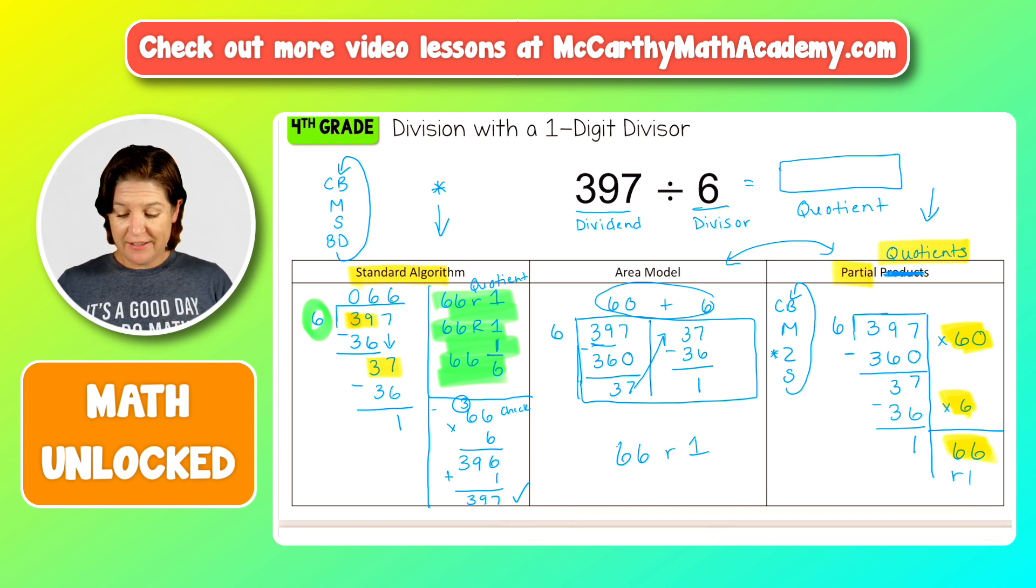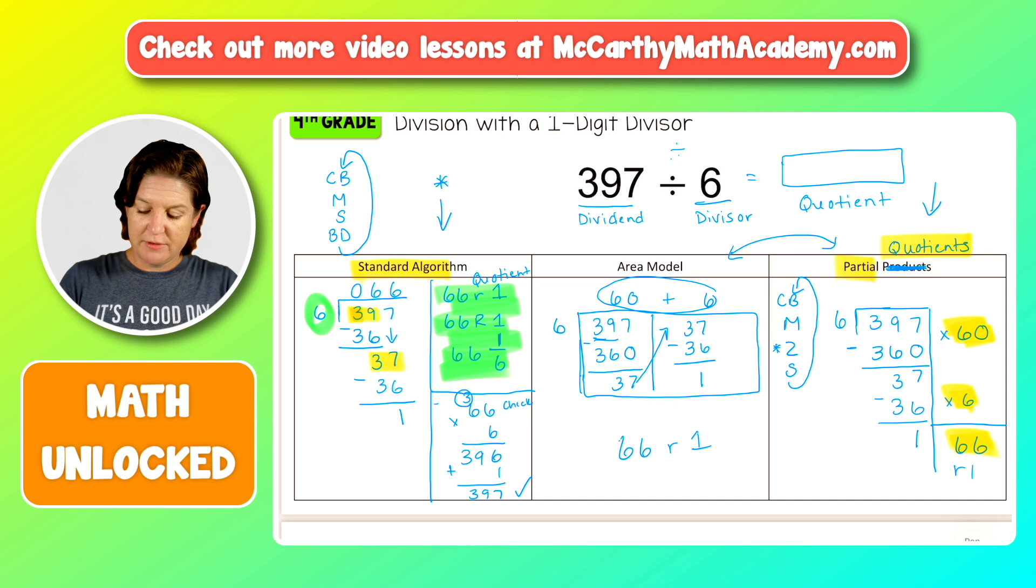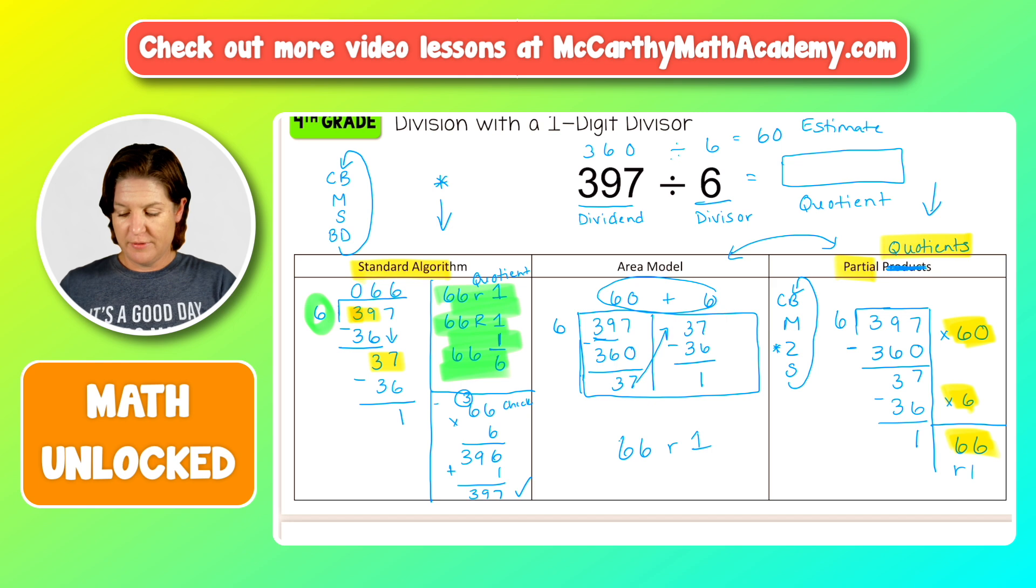Okay. And again, I cannot repeat this enough, but it is really important to make sure that you check using multiplication. I also didn't do something that I encourage you, which is to estimate this, right? To find reasonable value. So let's see, let's keep the divisor of six, but say that this is close to 360, which would get us 60 as an estimate up here. So when we arrive at 66 with a remainder of one, that makes sense. It's a reasonable value. Okay. All right. Woo.